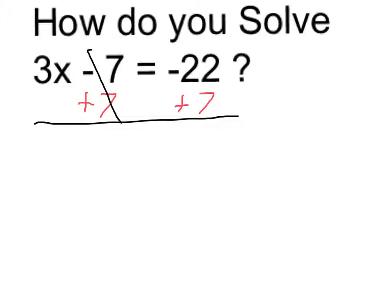That's going to cancel this out, so that leaves me with 3x because I added 7 on the left hand side. I'd have to do it on the right, and negative 22 plus 7 gives me the smaller negative number. It's going to get closer to 0. It's actually going to be negative 15.